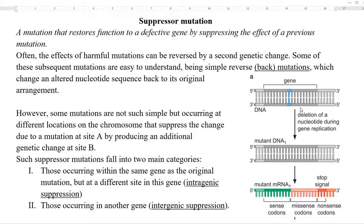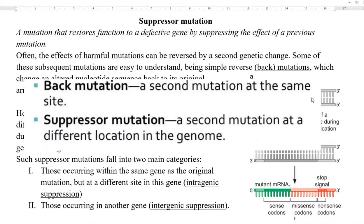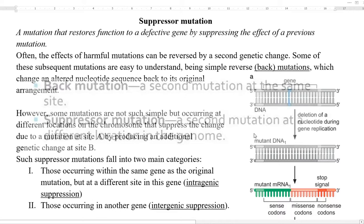Often the effects of a harmful mutation can be reversed by a second genetic change. Some subsequent mutations are easy to understand — they may be simple reverse or back mutations, which change and alter the nucleotide sequence back to its original arrangement. Some mutations can happen at different locations on the chromosome, which can suppress the effect of the previous mutation.